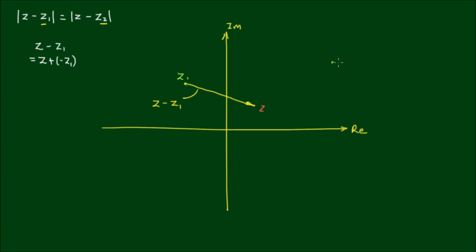Now let's say z₂ is another fixed point here. And so z - z₂ is a vector that points from z₂ back to z.